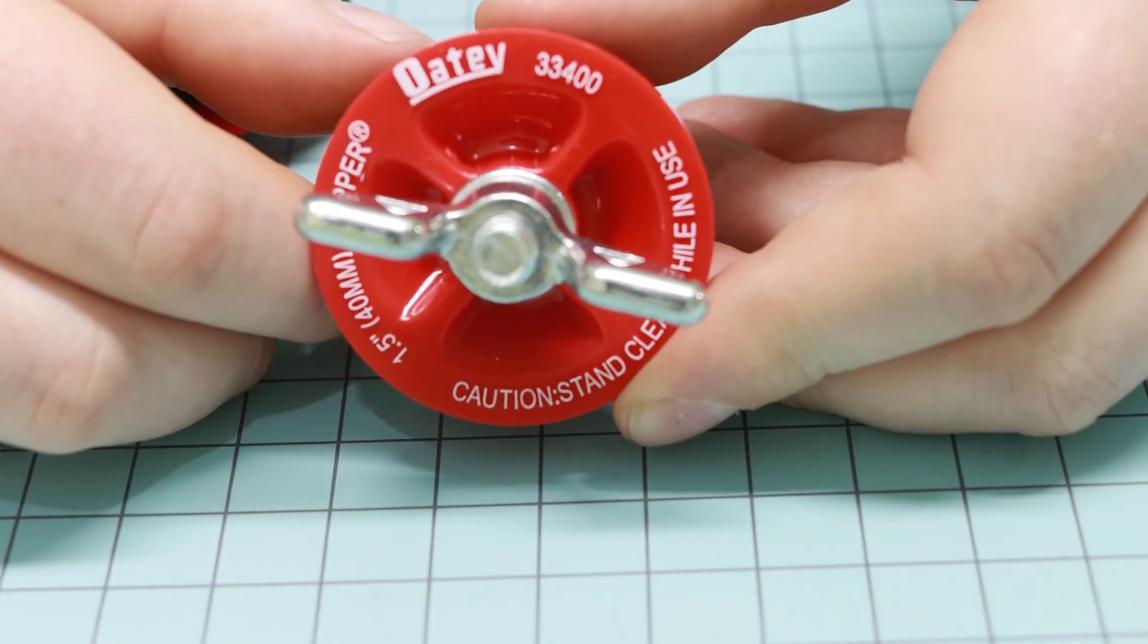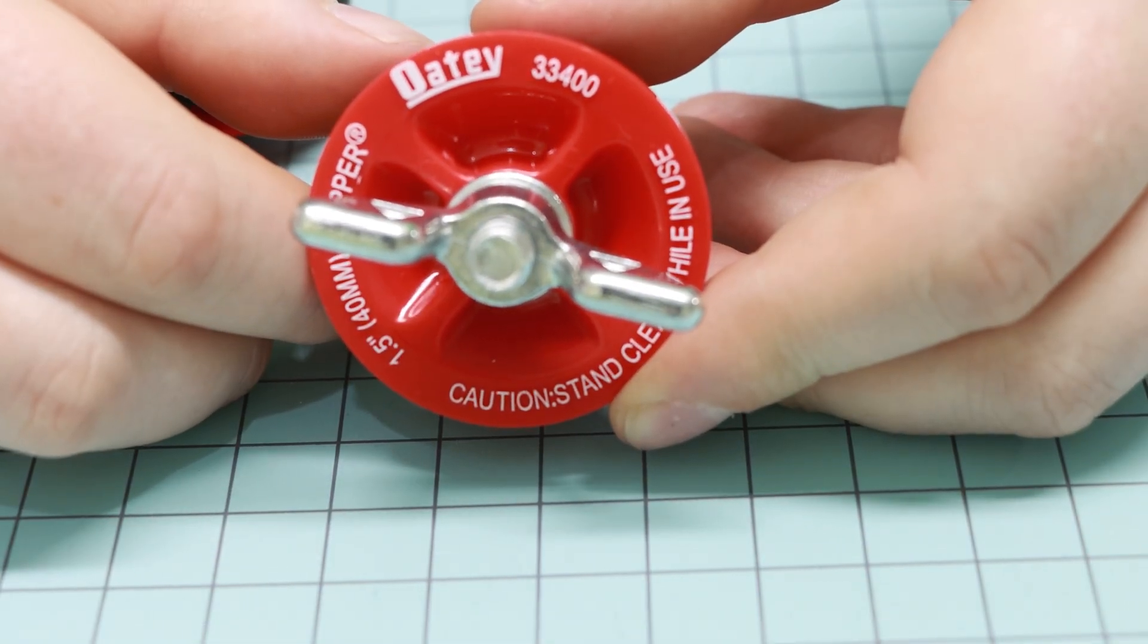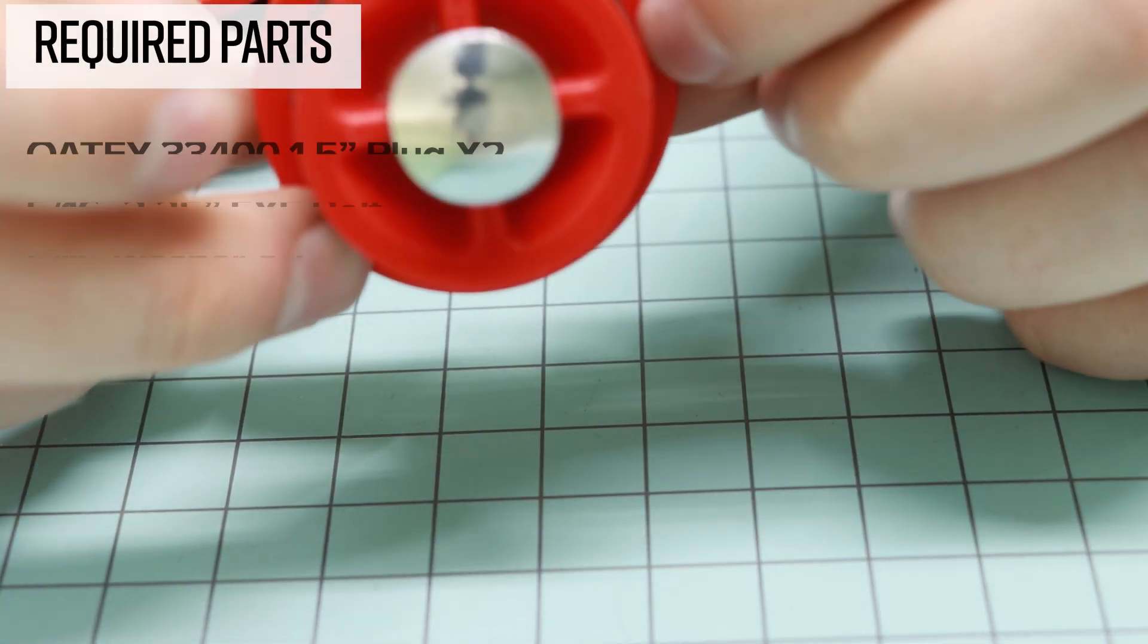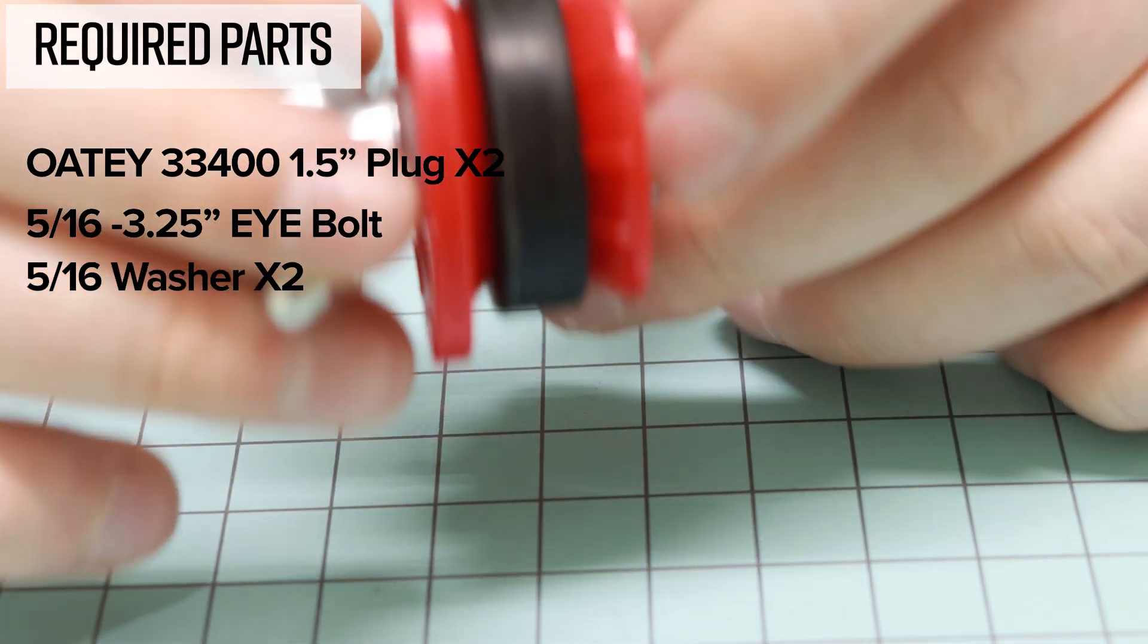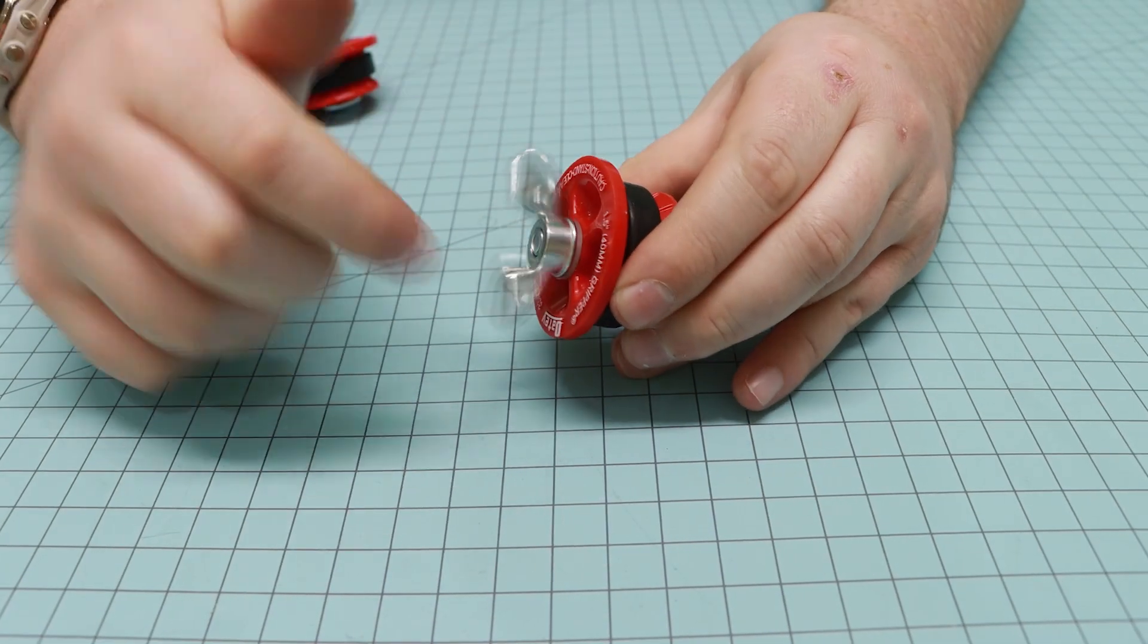Let's start with two of these OD33400 inch and a half expansion pipe fittings. They seal off open pipes. Let's start by dismantling both of them.